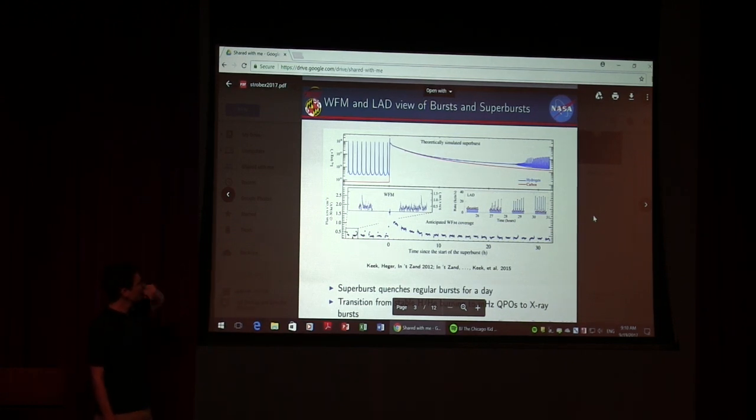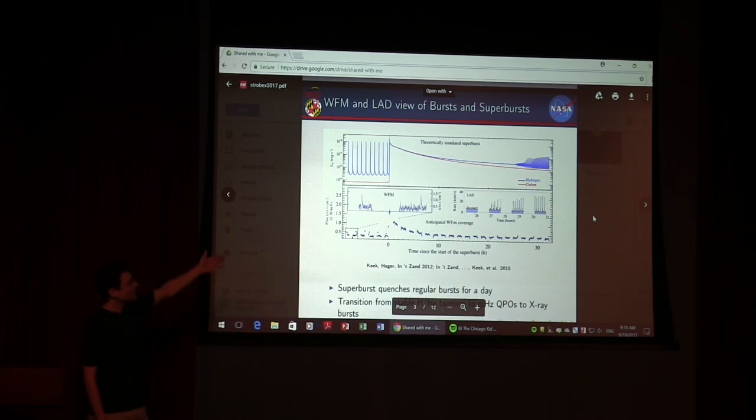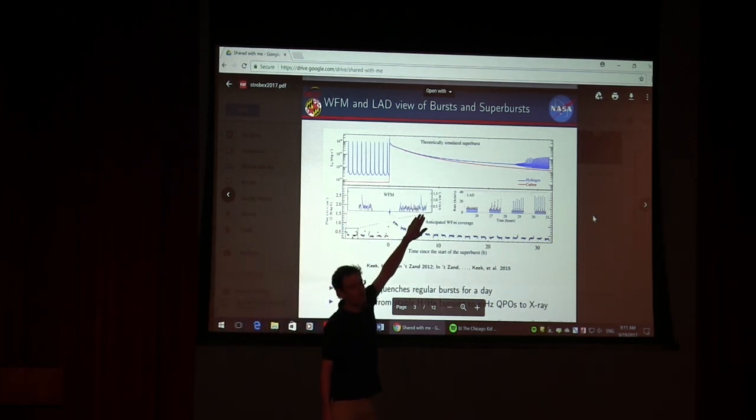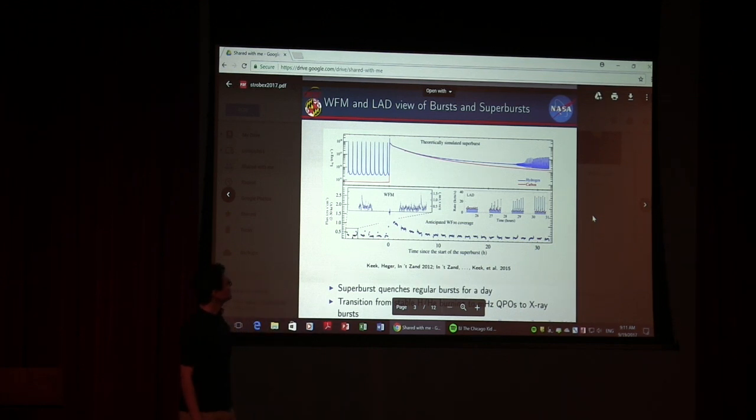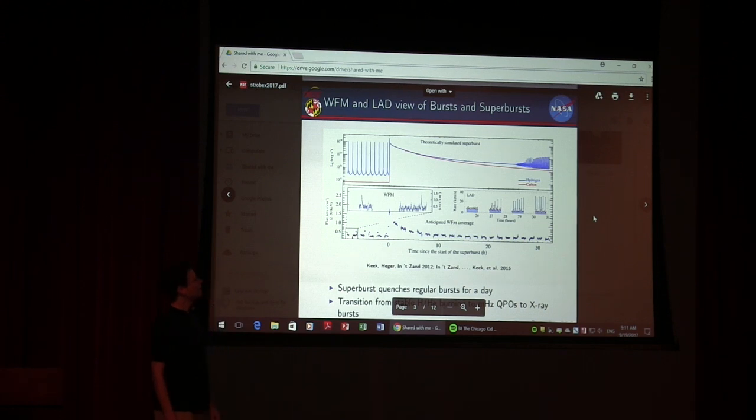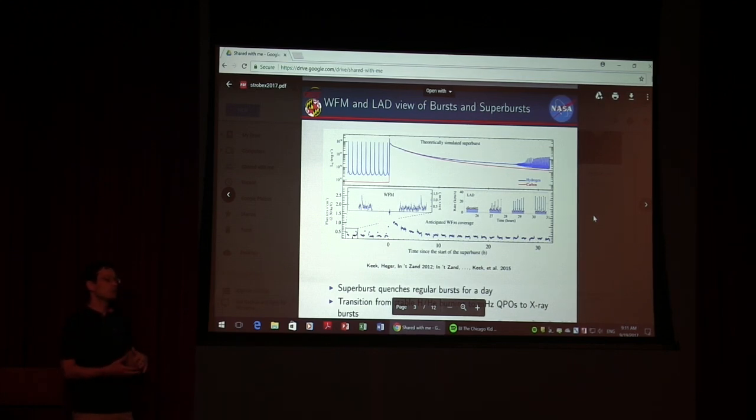At the bottom, Jian Helson took the simulated light curve and folded it through the wide field monitor's response. Very clearly you see the superburst, and in the inset the regular hydrogen-helium bursts pop out in detail. The weak bursts can't be picked out from the wide field monitor clearly, but the LAD will definitely do that, and the XRCA even better because those weaker bursts don't reach as high peak temperatures, so soft band coverage is advantageous.